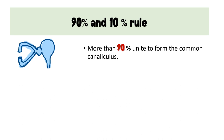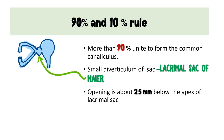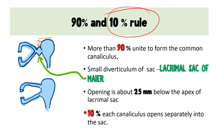An important concept is the 90%/10% rule. In more than 90% of people, the superior and inferior canaliculi reunite to form one single common canaliculus, which opens into the lacrimal sac — specifically into a small diverticulum called the sinus of Maier, situated about 2.5 mm below the apex of the lacrimal sac. In about 10% of the population, each canaliculus opens separately into the lacrimal sac without forming a common canaliculus.